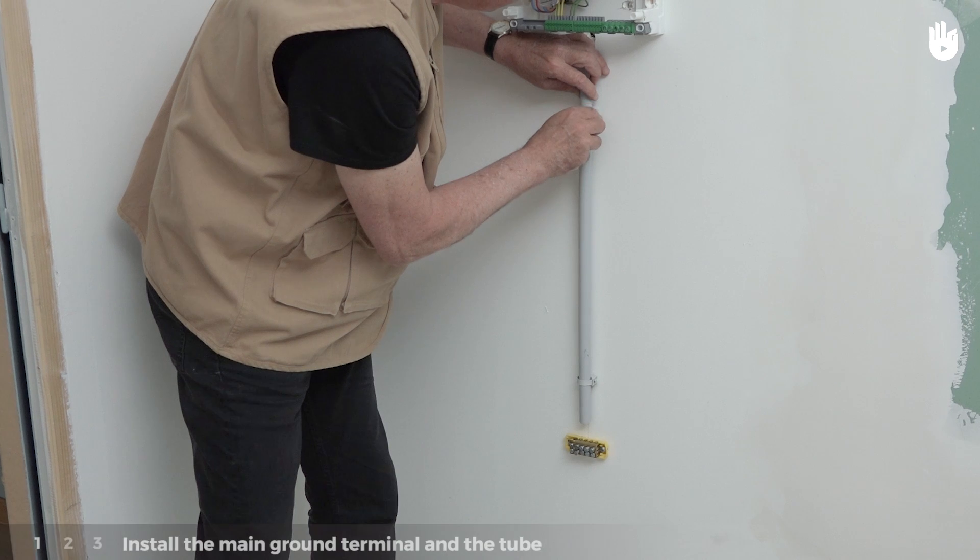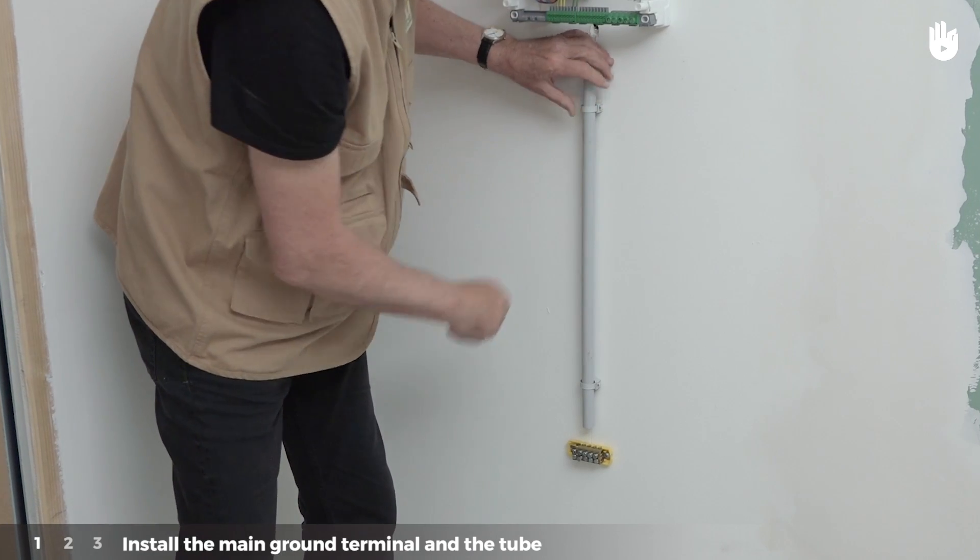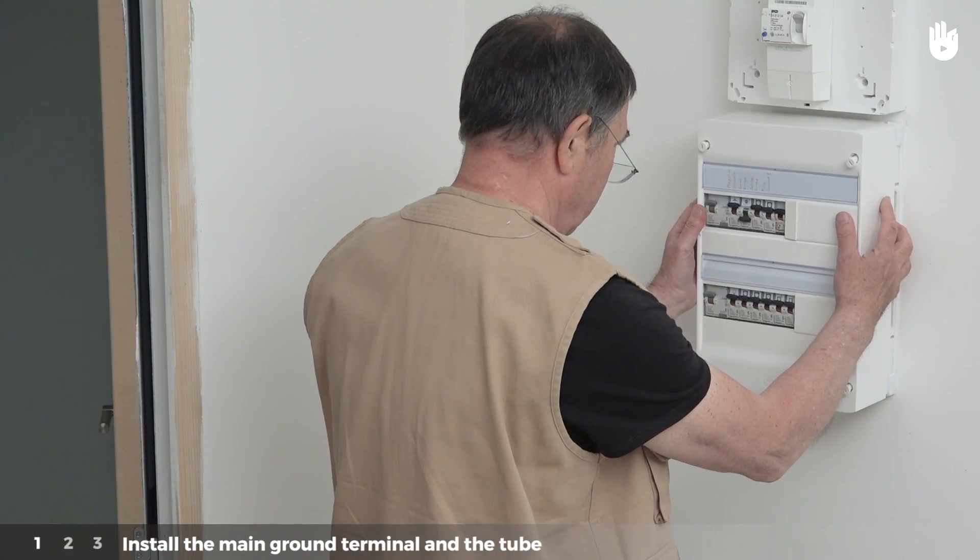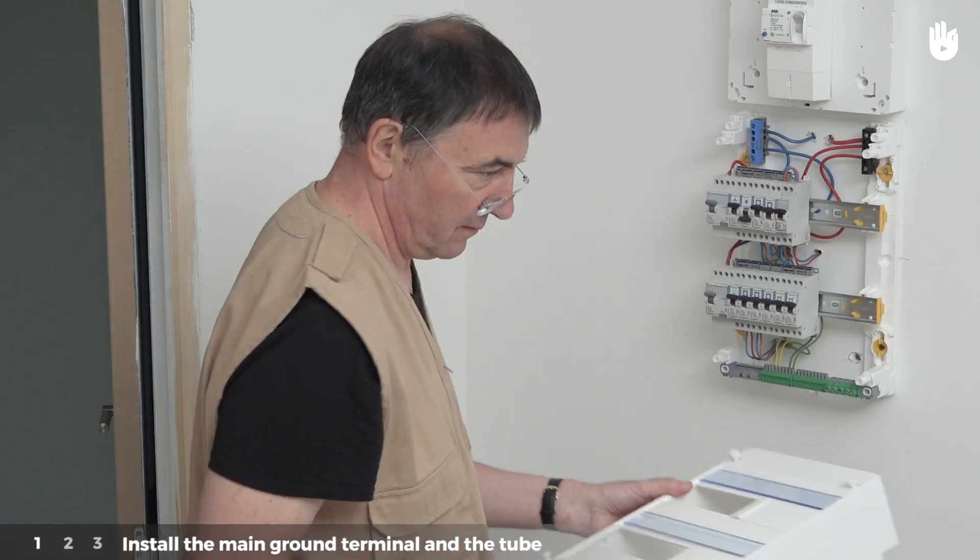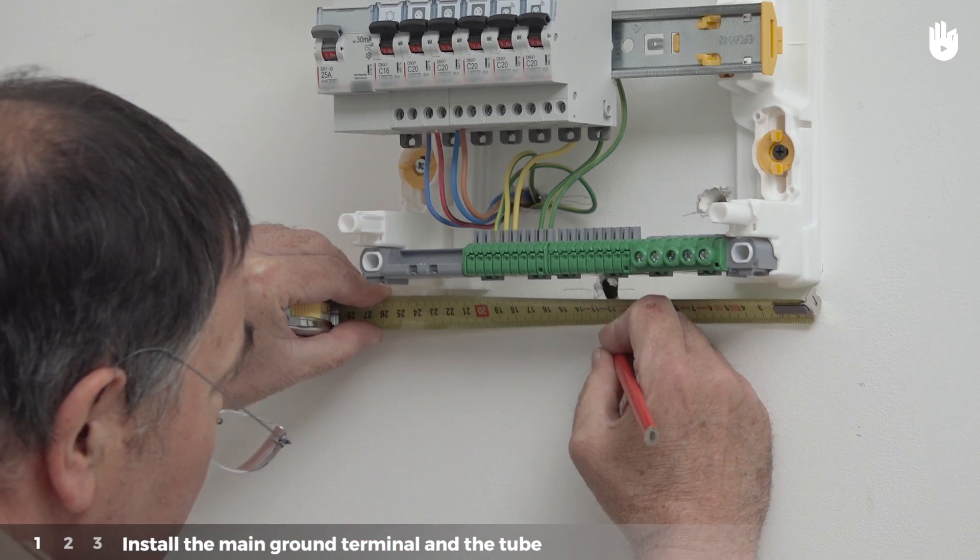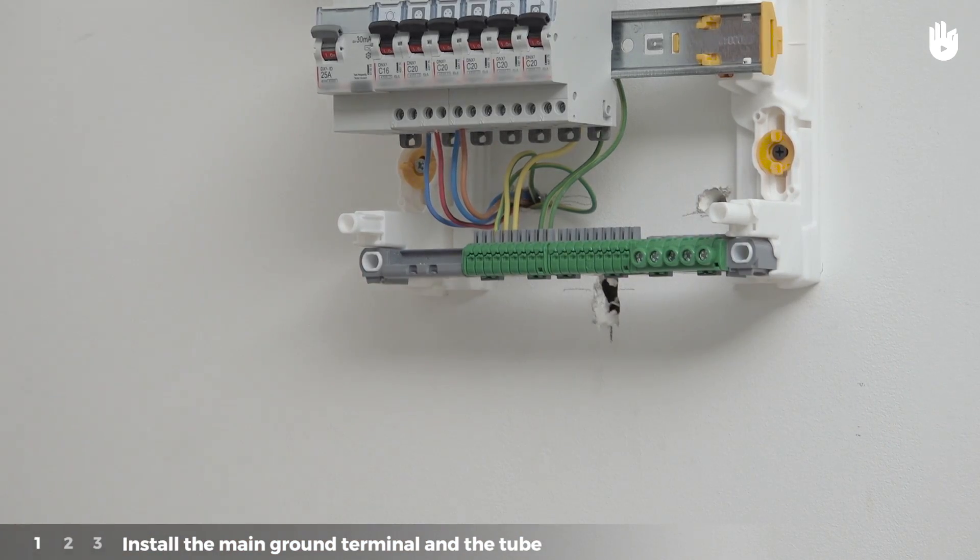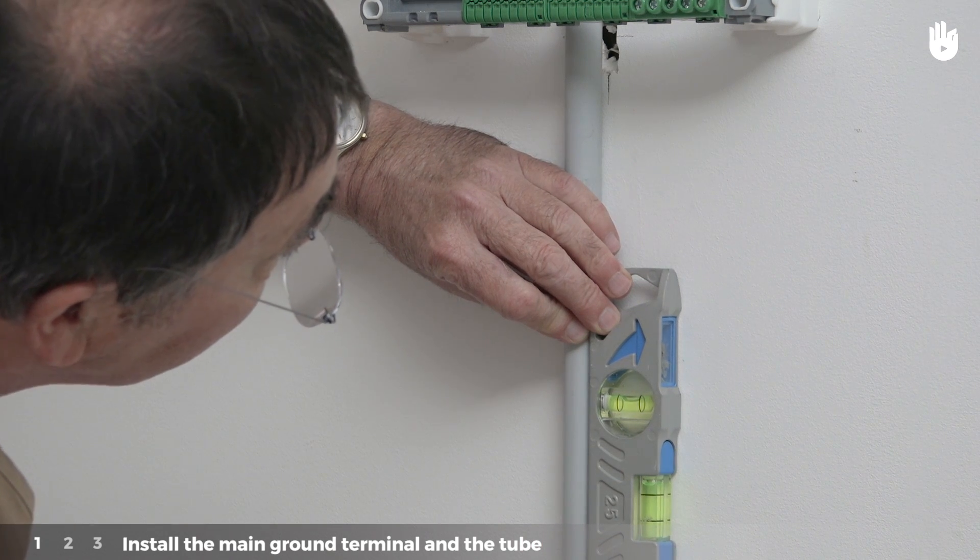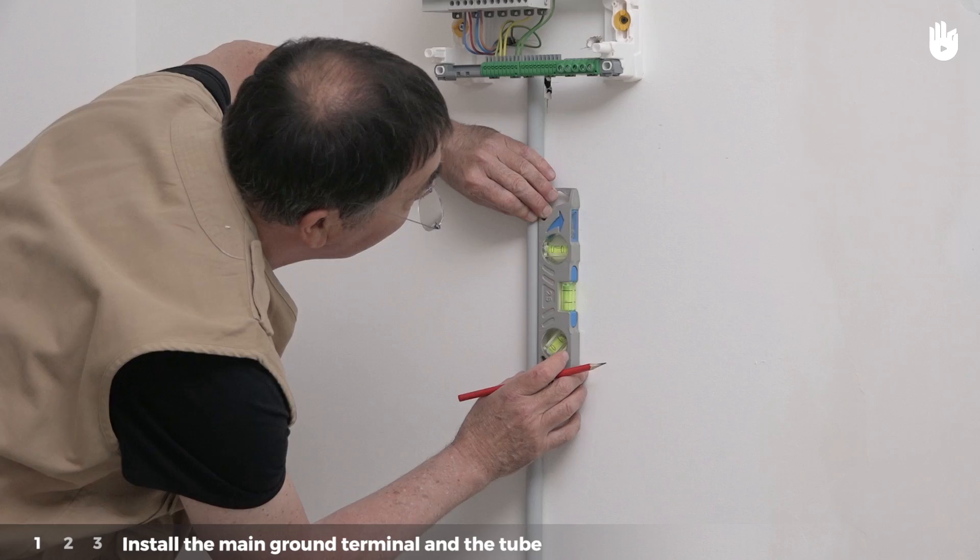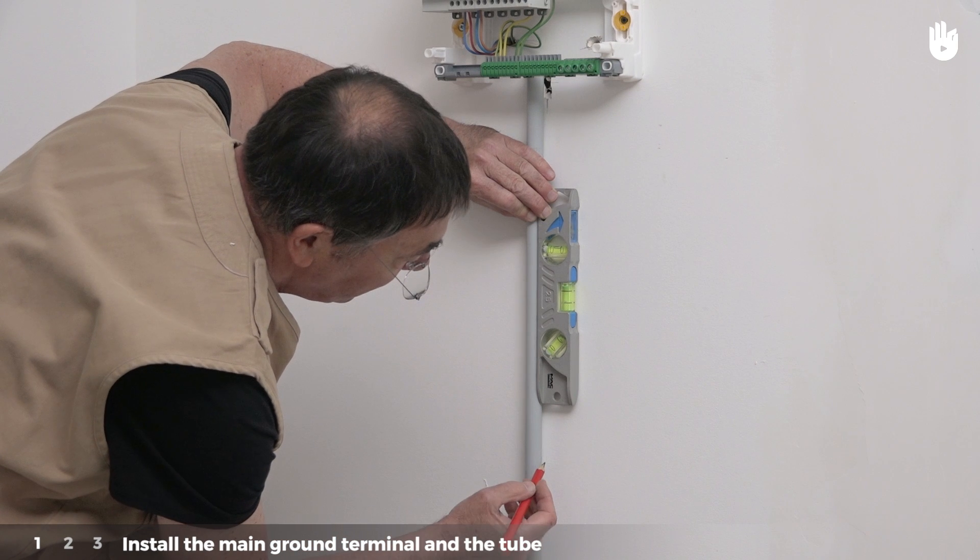Step 1: Install the main ground terminal and the tube. Take the cover off the electrical panel. Measure and mark the middle of the width of the panel with the pencil. Place the tube in a vertical position starting at this point. Note and mark in pencil the position of the tube.